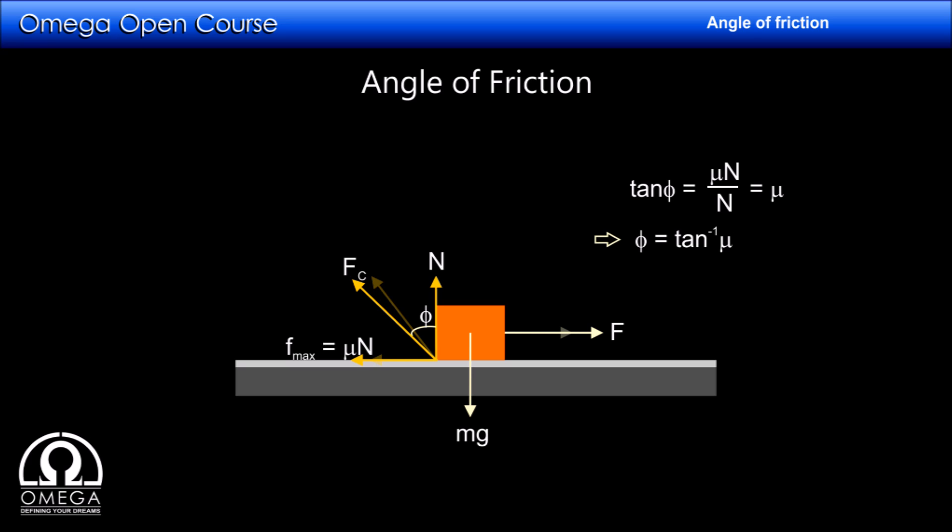If external force is increased further, the block starts moving but the value of friction force remains mu times N and thus the angle of friction remains fixed at tan inverse mu.